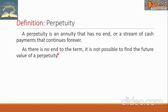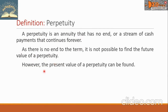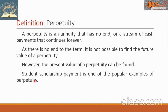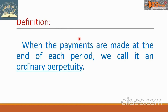As there is no end to the term, it is not possible to find the future value of a perpetuity. However, the present value of a perpetuity can be found. Student scholarship payment is one of the popular examples of perpetuity. When the payments are made at the end of each period, we call it an ordinary perpetuity.